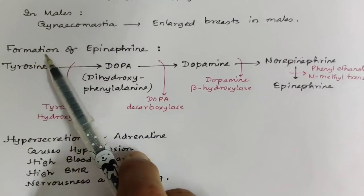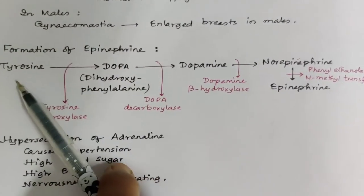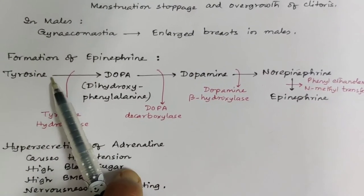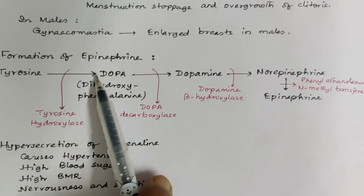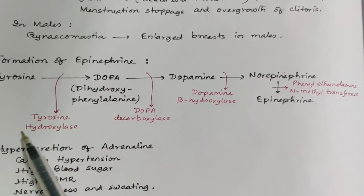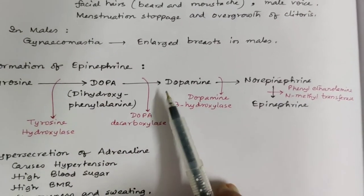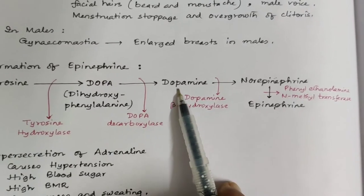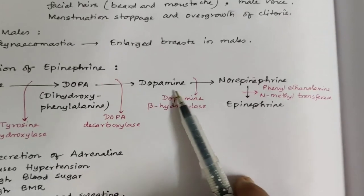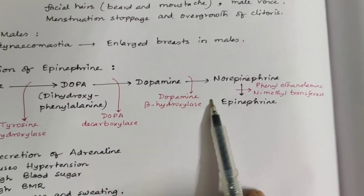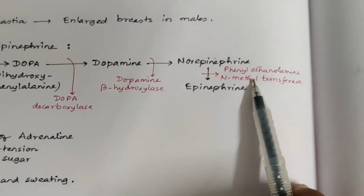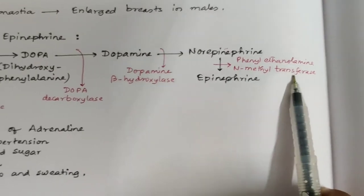How is epinephrine formed? It starts from the mother product tyrosine. Tyrosine gives rise to DOPA (dihydroxyphenylalanine) with the effect of tyrosine hydroxylase. DOPA is transformed into dopamine with the help of DOPA decarboxylase. Dopamine forms norepinephrine with the help of dopamine beta-hydroxylase. Norepinephrine forms epinephrine with the help of phenylethanolamine N-methyltransferase (PNMT).